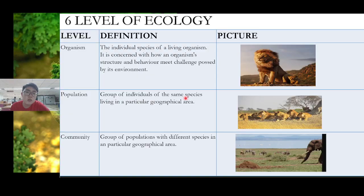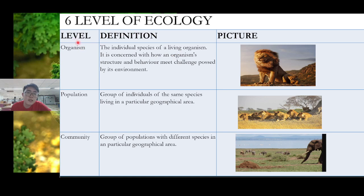So, levels of ecology. Maybe all of you already know the term 'ecology.' In the world there are a total of six levels of ecology. The lowest level is called the organism. I think this term is very familiar to you.